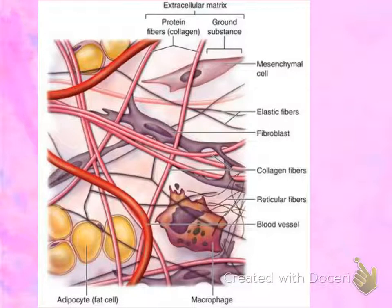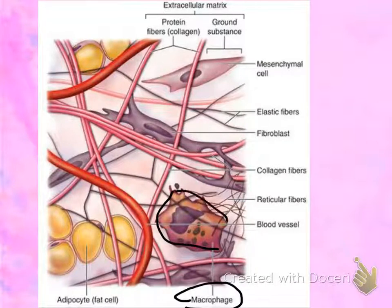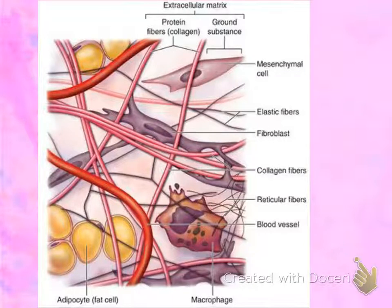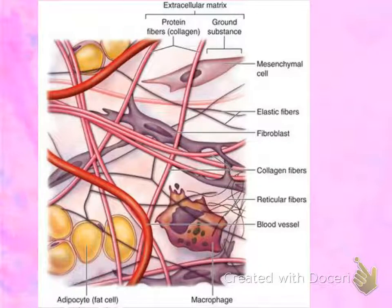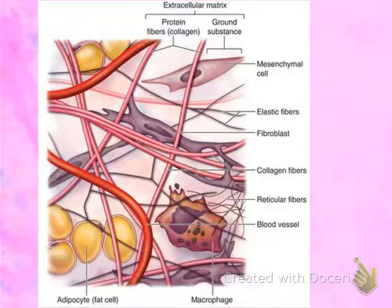You might also see a macrophage. You can see it pictured right here. Depending on the tissue, you might also see adipocytes, which are fat cells. What's missing in this picture — you could also run into something called a mast cell, but it's not in this picture. Then you can also have a blood vessel, depending on which type of tissue you're looking at.